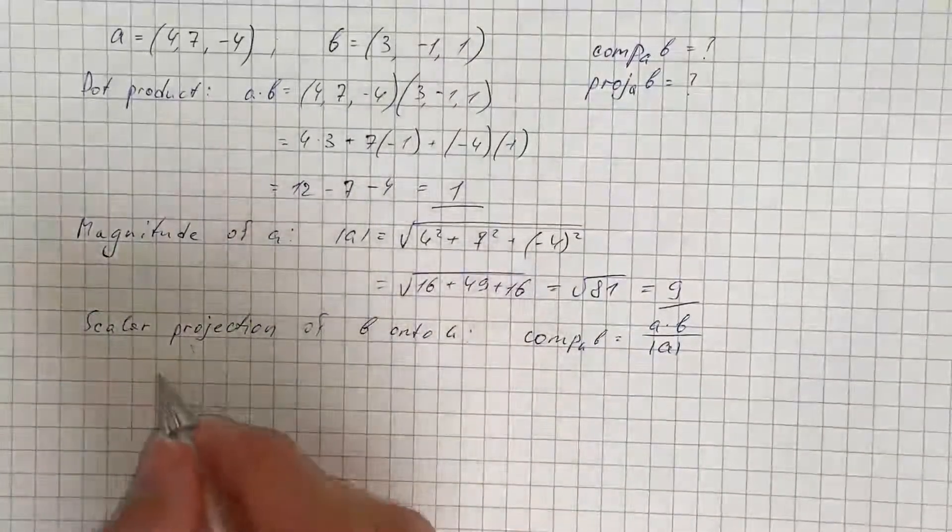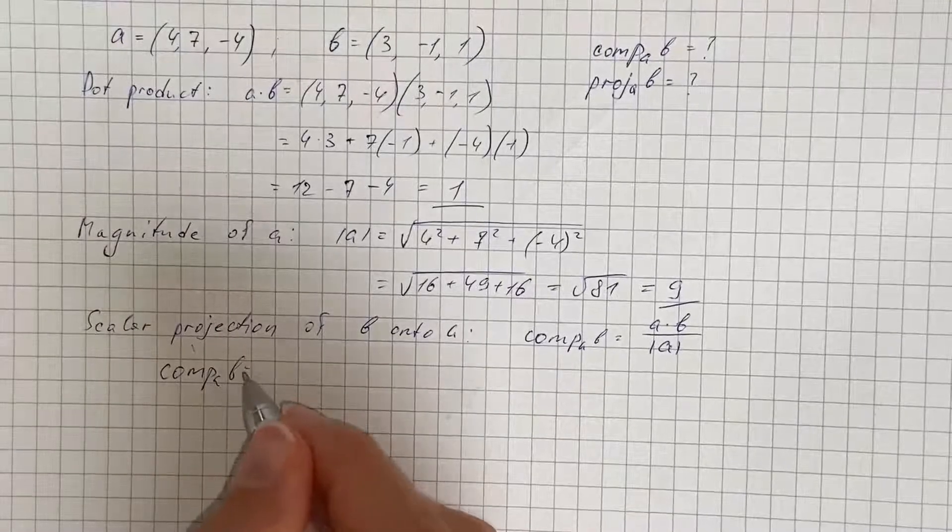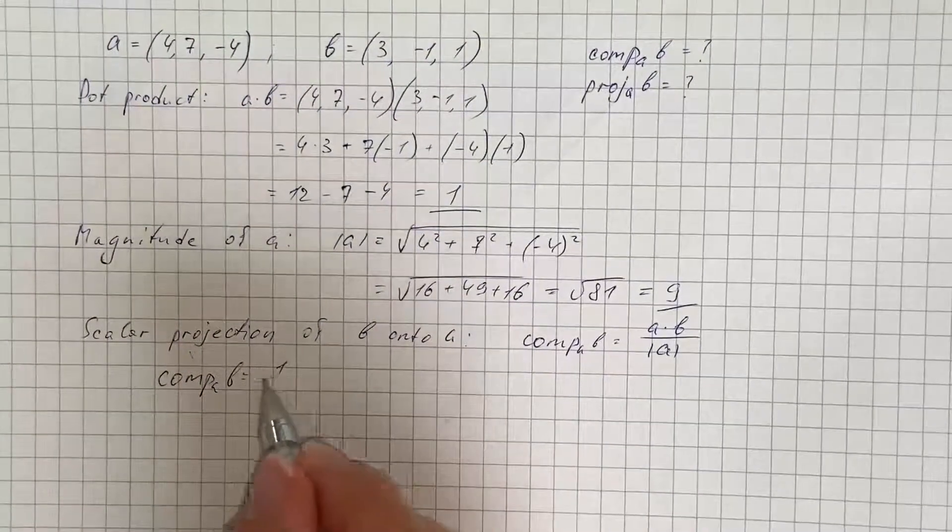Therefore we get the scalar projection equals 1 over 9.